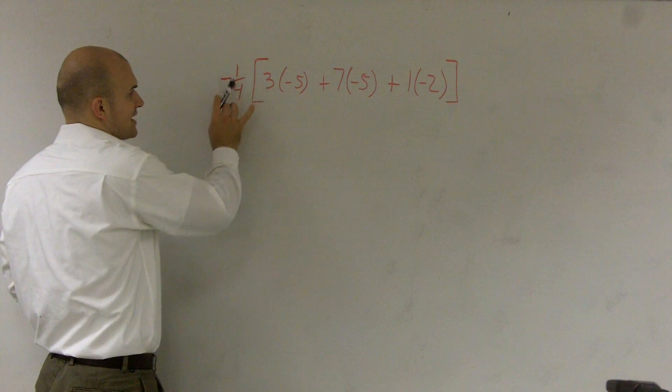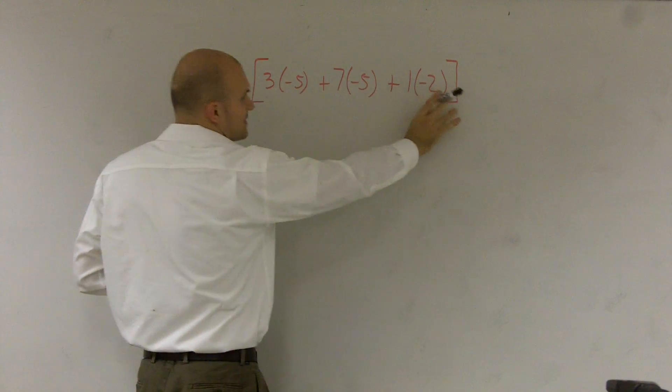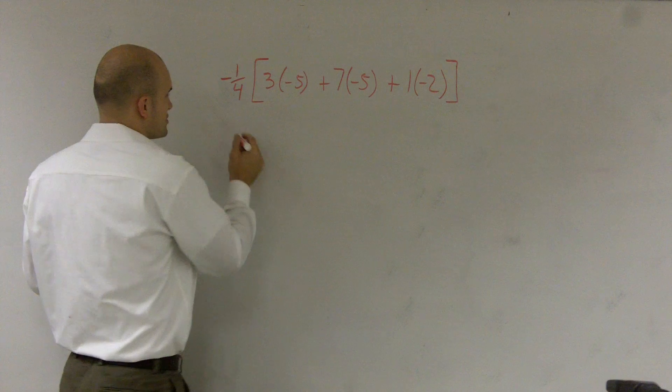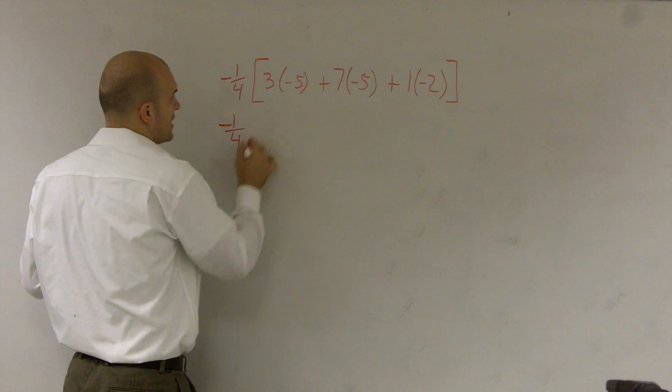Now I can't do anything with this negative 1/4 until everything is simplified inside the parentheses. So I'll just rewrite the negative 1/4 here for now.